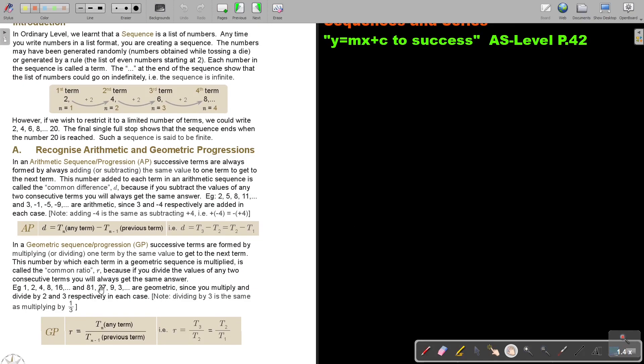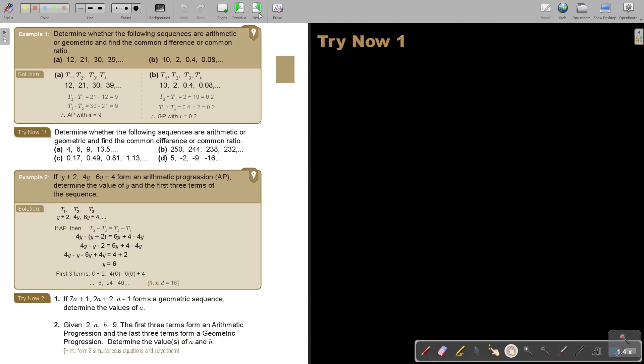Let's move on. Now, in a GP R, so any term divided by the previous term. So, N divided N minus 1 or 3 divided 2, 2 divided 1. So, this is just subtraction. This is just division. But we did it in ordinary level. Let's look at the basic example. And this is usually where you start.